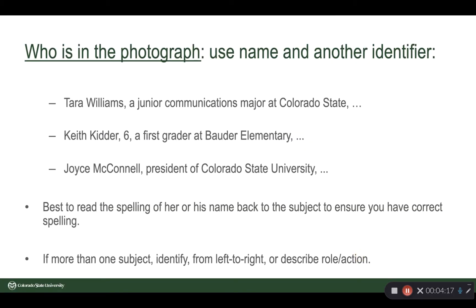Let's look really closely at captions and caption style. Who's in the photograph? You want to use their name and some other identifier. For example: Terrell Williams, a junior communications major at Colorado State University. Keith Kidder, six, a first grader at Bowder Elementary. Joyce McConnell, president of Colorado State University. With things like Colorado State University, you want to spell that out on first reference, and then you can abbreviate once you've established which CSU we're talking about, because remember, it could mean Cal State University.